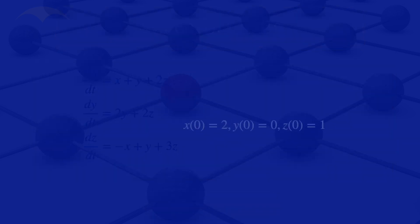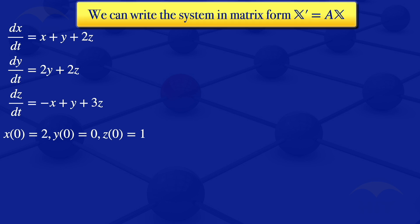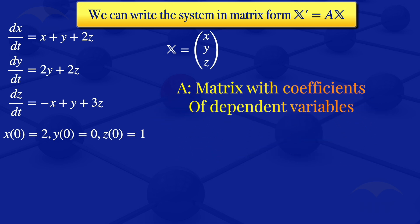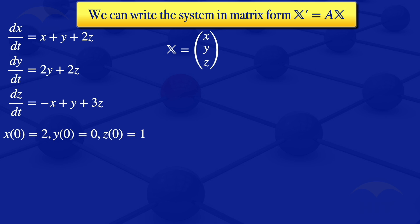For this given system of ODEs, we can write it in matrix form as x prime equals A multiplied by x, where x is the column vector of dependent variables x, y, z. The matrix A contains the coefficients of the dependent variables, and in this case A is the 3 by 3 matrix with elements 1, 1, 2, 0, 2, 2, minus 1, 1, 3.